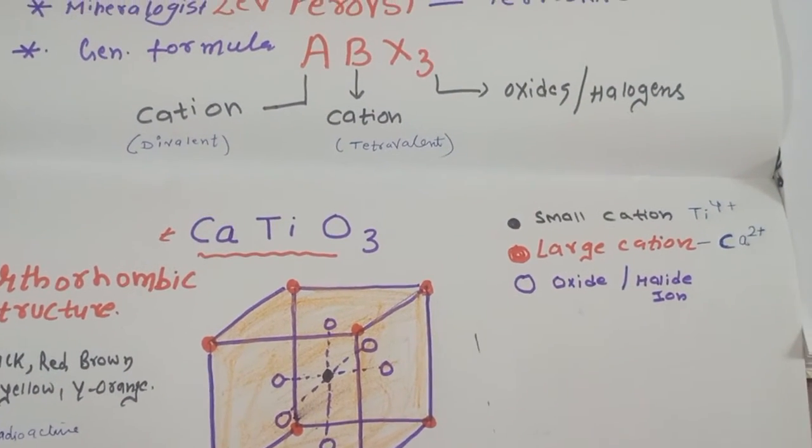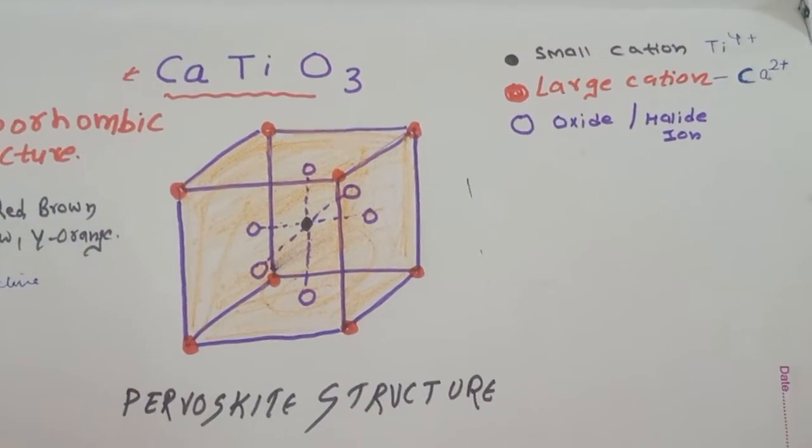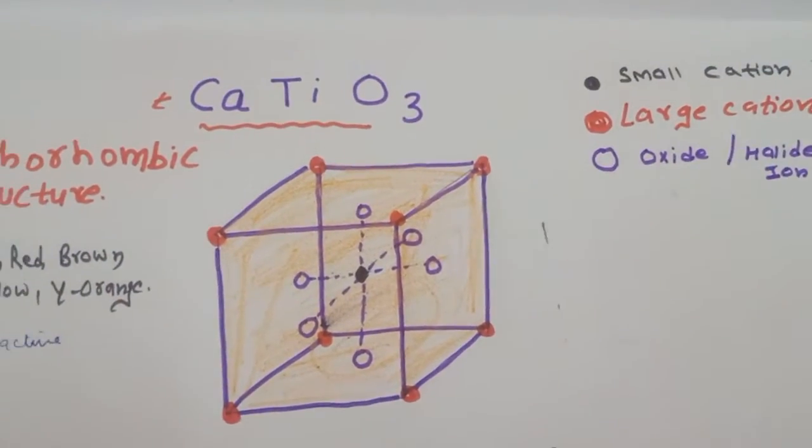So these are the perovskite general formula ABX3 type. This structure you can make and do the practice also. It's not very tough.